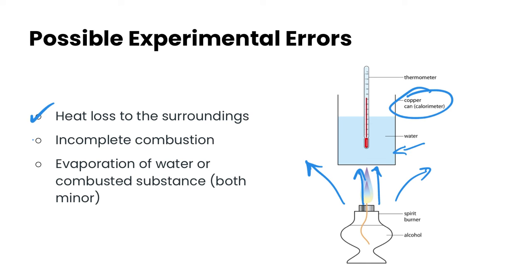The second possible error is incomplete combustion. So you could be producing some just carbon and carbon monoxide instead. And when you have incomplete combustion, it actually gives off less heat than complete combustion does. So it's not going to give you the true picture of what the delta H of combustion is.